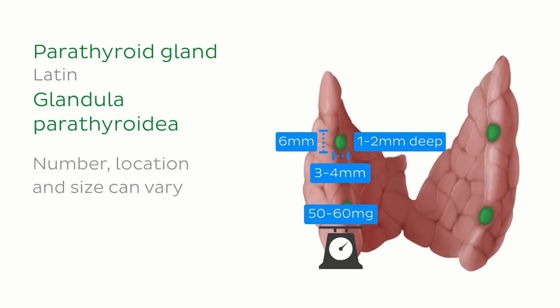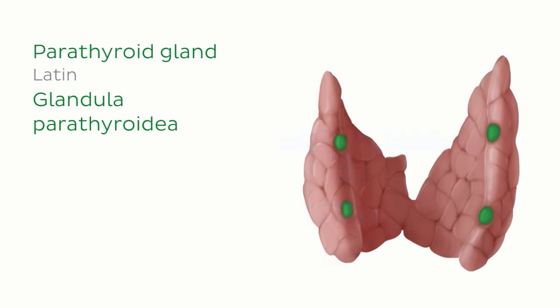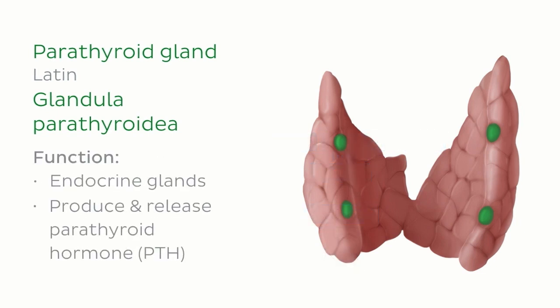The number, location, and size of the parathyroid glands can vary, which is important to keep in mind for events such as surgery or cancer metastasis. The parathyroid glands are also endocrine glands, producing hormones that play an essential role in the regulation of calcium levels. The hormone they produce is called parathyroid hormone, which raises calcium levels in the blood.